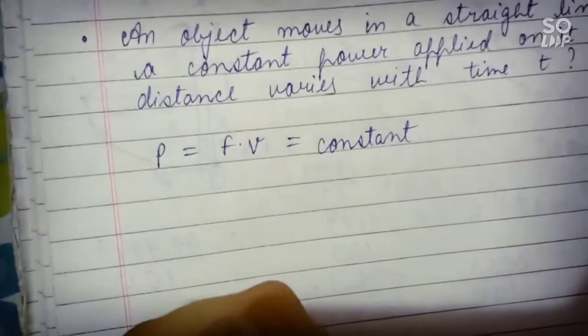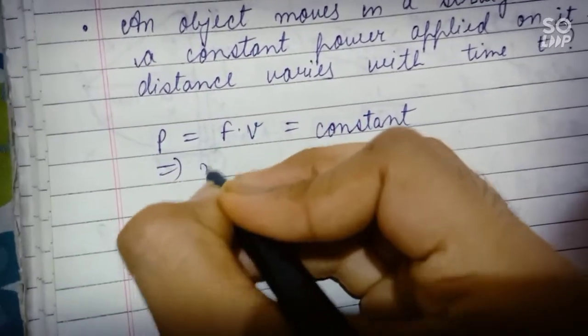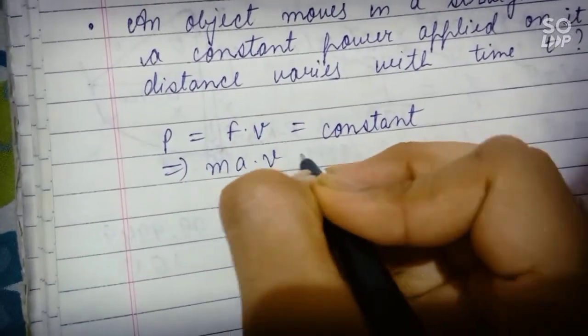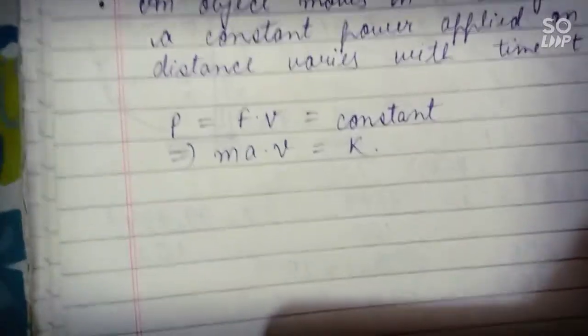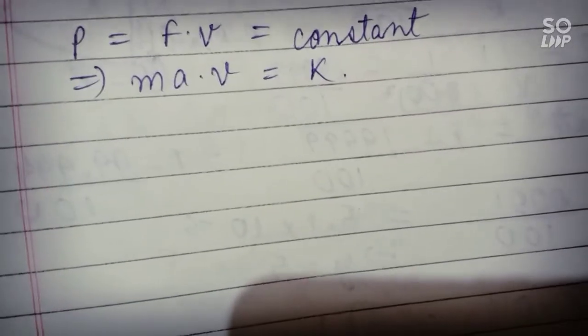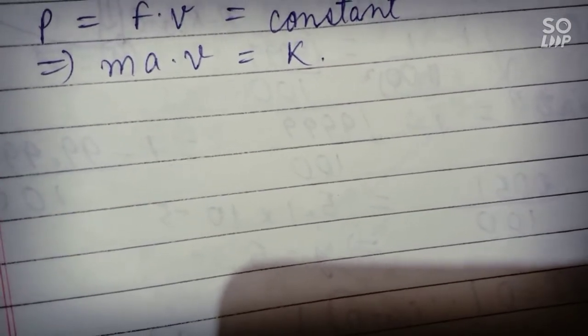So we can write F as ma is equal to, let it be a constant K. Acceleration is dV by dt.